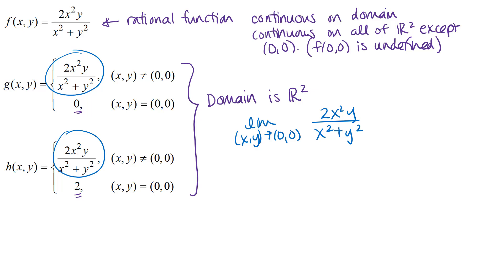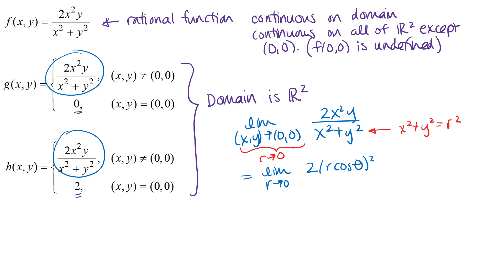Even without looking at the graph, you might notice features of this function that indicate polar coordinates would help. There are two important features: one is that I have x² + y², which can be rewritten as r² in polar coordinates, reducing the number of variables. The other feature is that the point I'm approaching is the origin, so I can let r approach zero and handle all paths of approach toward the origin. I'll convert to polar coordinates: substituting r·cosθ for x and r·sinθ for y, then simplify — the r² in the denominator cancels with the r² in the numerator.